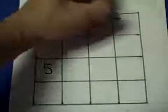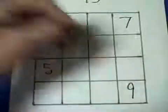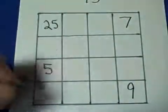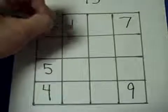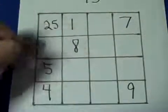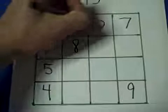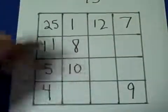So let's say we put 25 over here, 5 here, let's put 7 here, 9 here, we'll put 4 here, we'll put 1 here, 8 here. This will be 11, 12.